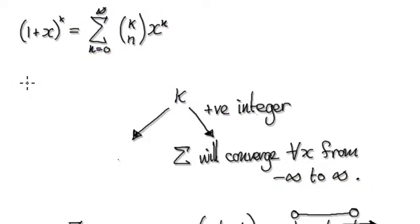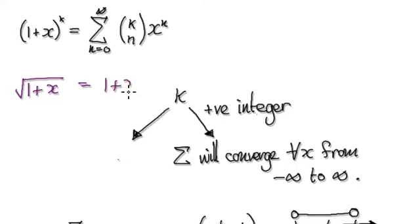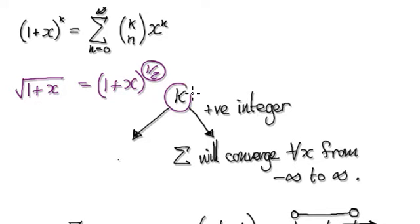But if you have, say, the square root of 1 plus x — that's the same as 1 plus x to the power of a half — then in this case k is not a positive integer.